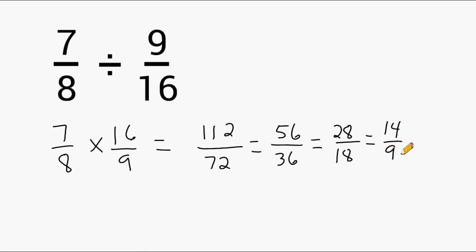Now at this point we cannot reduce any further, so we can rewrite this as a mixed number. And we do this by taking the numerator and dividing it by its denominator. And 9 goes into 14 once, and that would leave us with a remainder of 5. So we would say that 14 ninths is equal to 1 and 5 ninths.